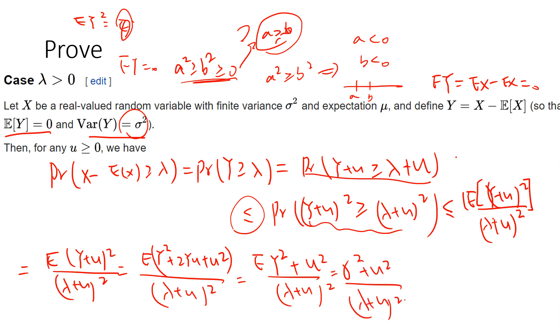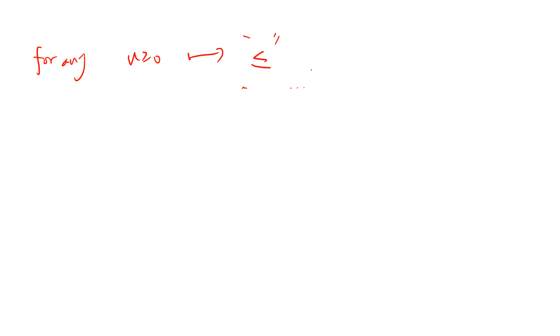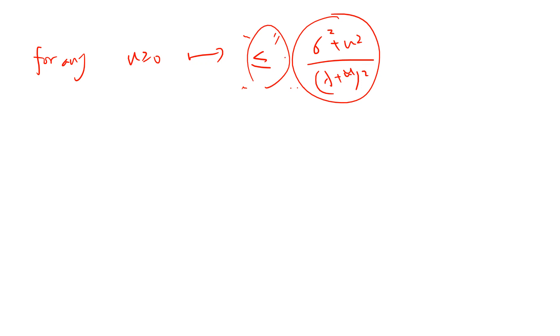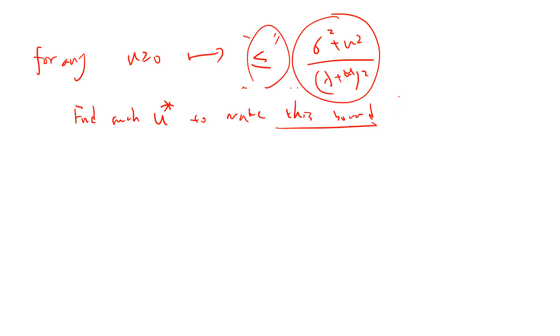So for any u ≥ 0, our probability has the upper bound (σ² + u²) / (λ + u)². This bound holds for any u, so in order to get the tightest result, we need to find u* that makes this bound as small as possible — that is, we need to minimize (σ² + u²) / (λ + u)² over u ≥ 0.